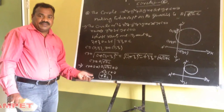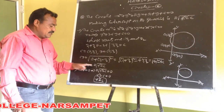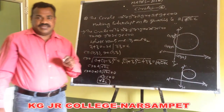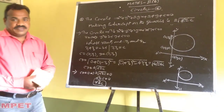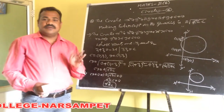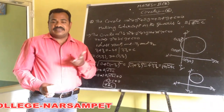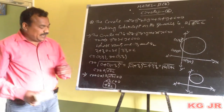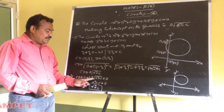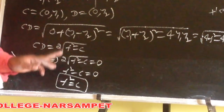This is the formula for the circle making intercept upon the y-axis. These are useful results: the circle making intercept on the x-axis is 2 into root of g square minus c, and the condition for the circle touching the x-axis is g square equals c. The intercept on the y-axis is 2 into root of f square minus c, and the condition for touching the y-axis is f square equals c.